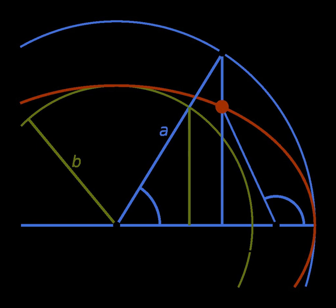The eccentric anomaly is one of three angular parameters that define a position along an orbit, the other two being the true anomaly and the mean anomaly.